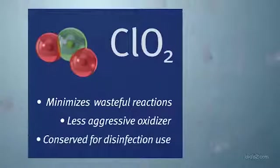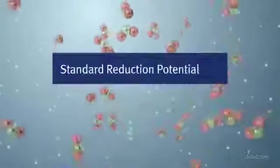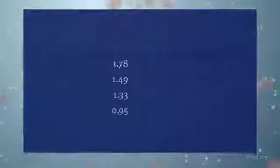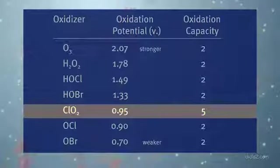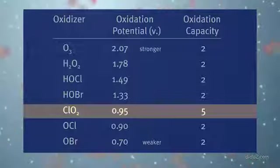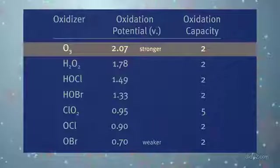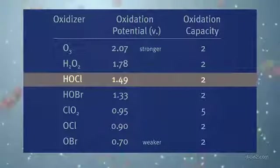This conserves ClO2 for its intended disinfection purpose. The strength of a given chemical to act as an oxidizer is represented by the standard reduction potential, SRP, which is measured in volts. As shown in this table, chlorine dioxide has an SRP of 0.95 volts, which makes it a less aggressive oxidizer compared to many other common disinfectants used in water treatment applications, such as ozone at 2.07 volts and hypochlorous acid at 1.49 volts.